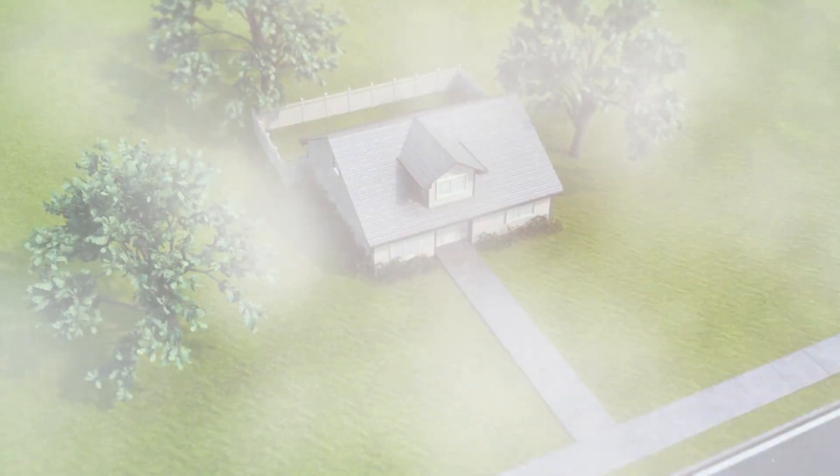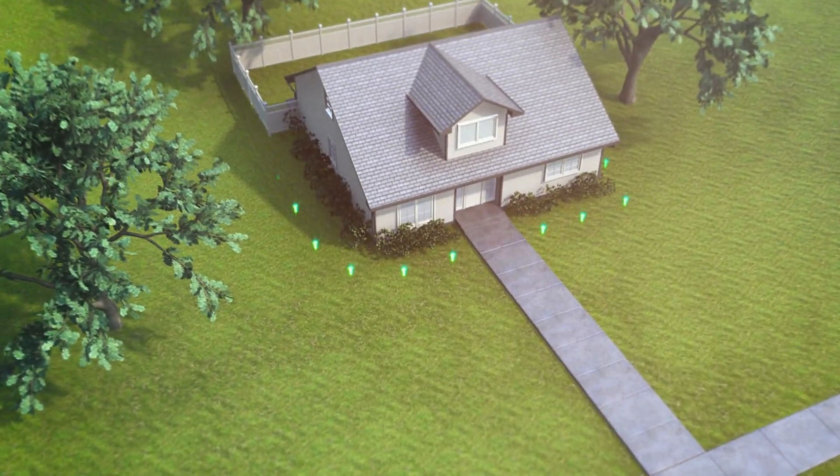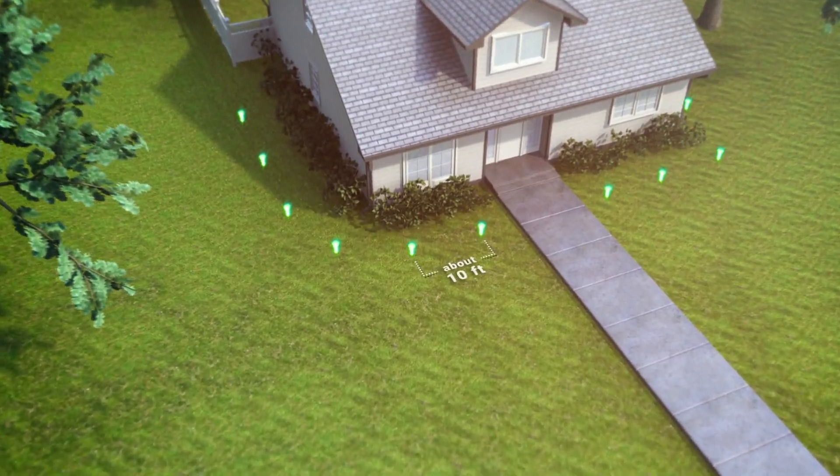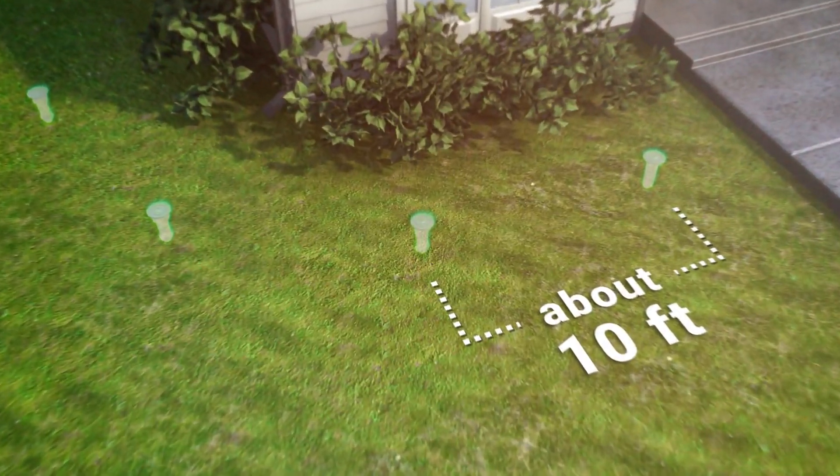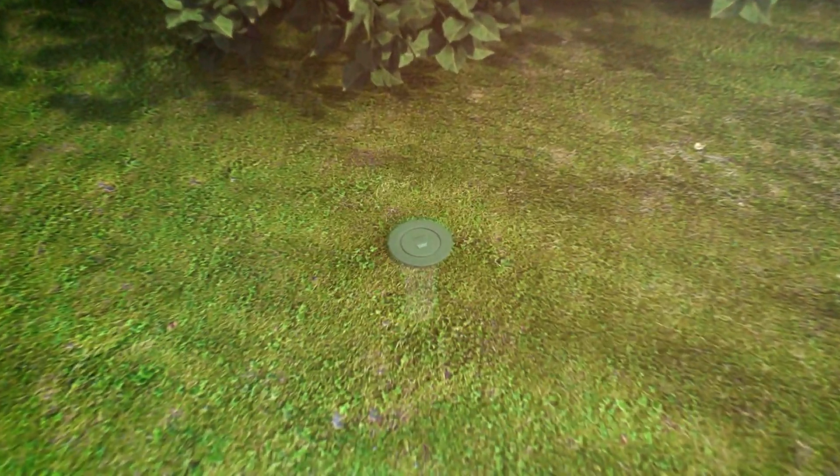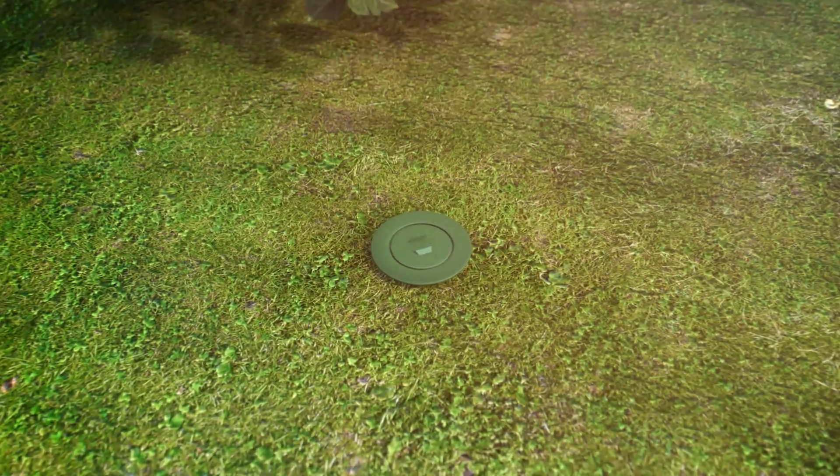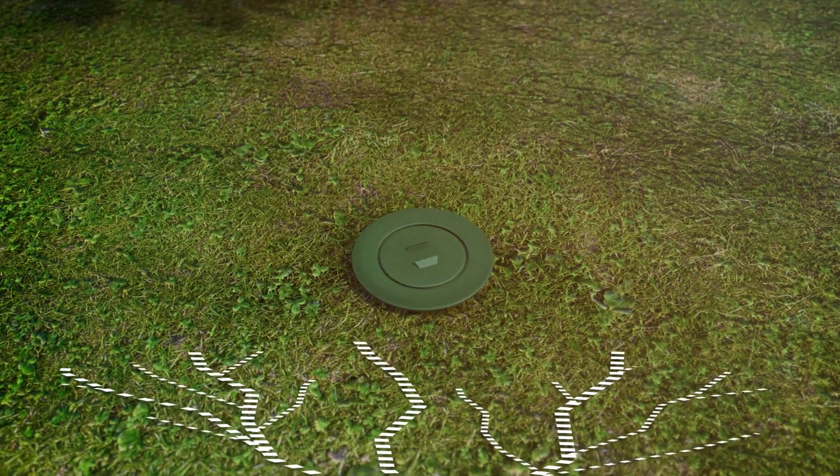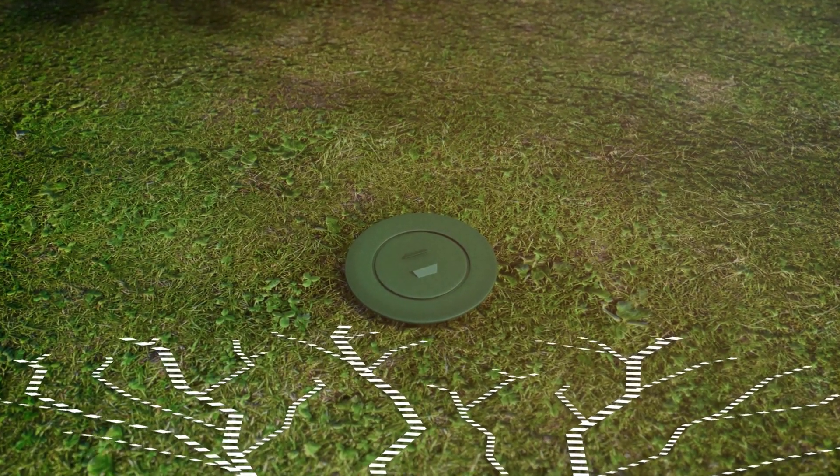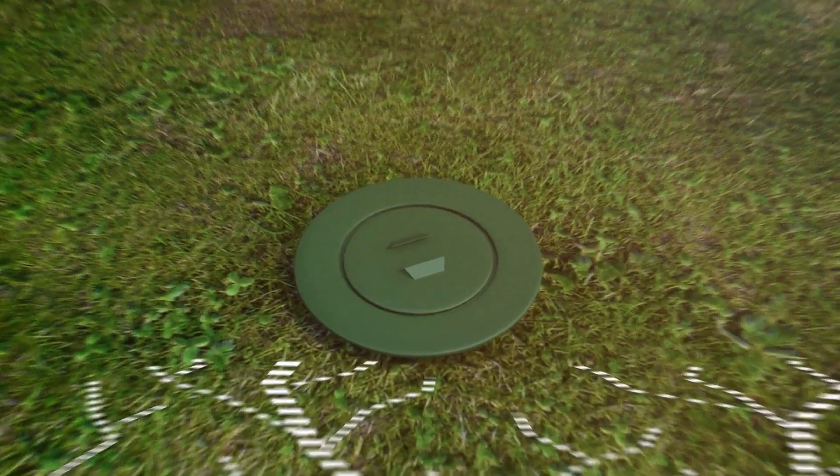The Centricon system places bait stations in the ground about every 10 feet around the home. This bait placement and spacing is effective because of how worker termites explore. Research shows that worker termites leave the colony in numerous straight lines, like a starburst or spokes on a wheel, but then radiate out like branches from a tree trunk.